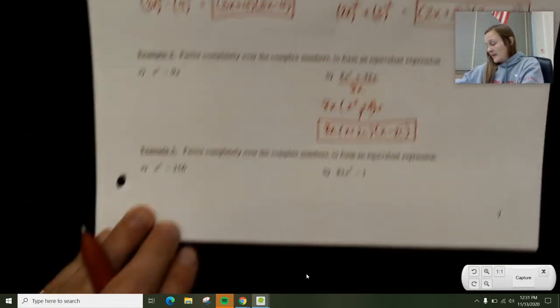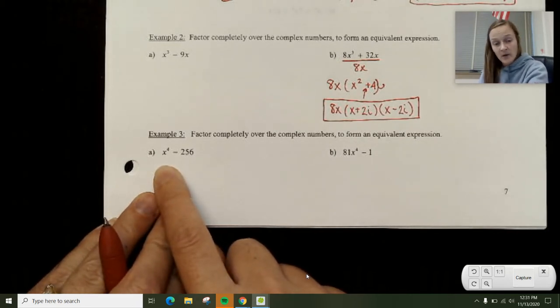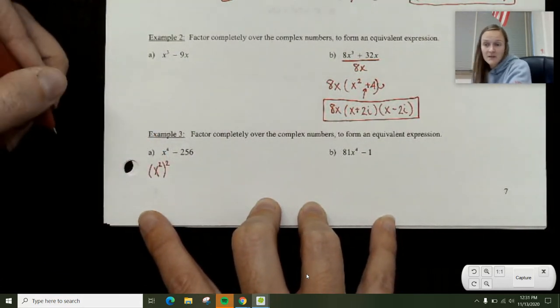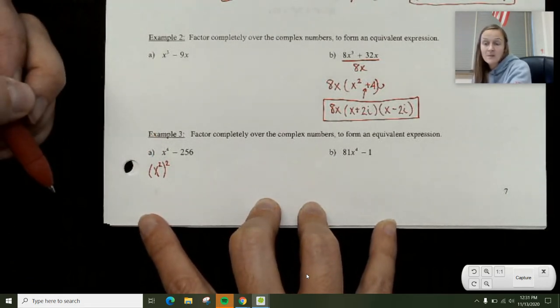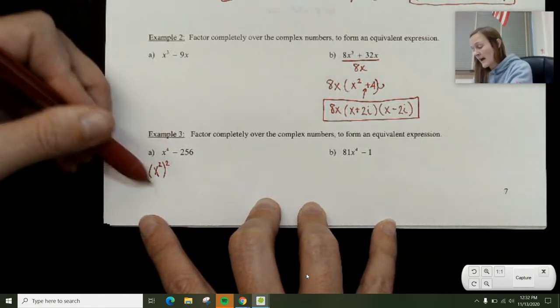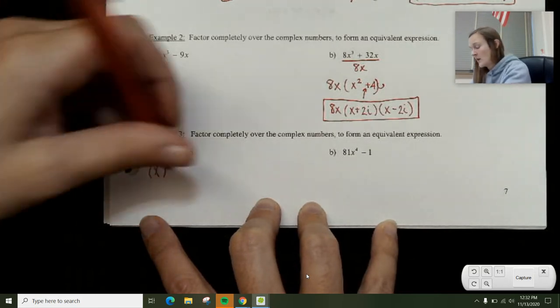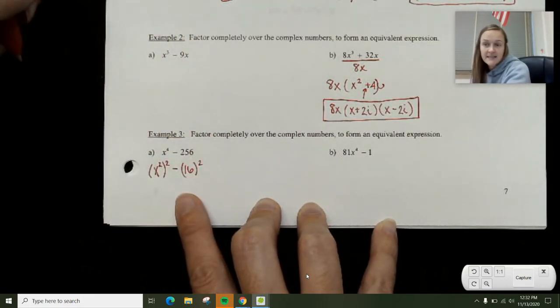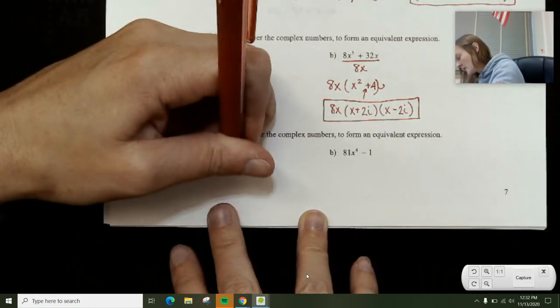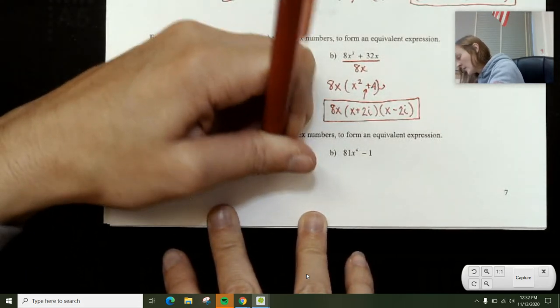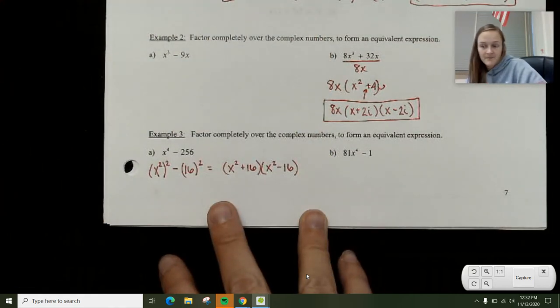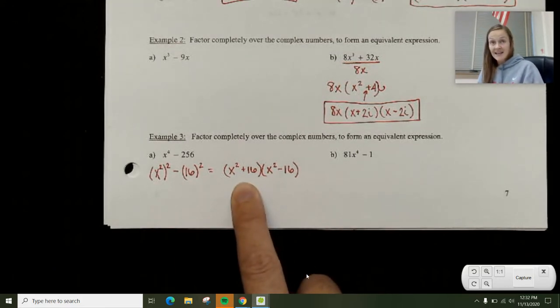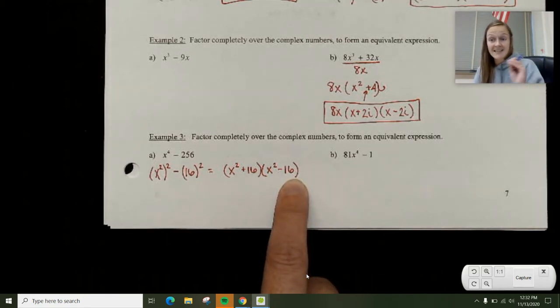The last one I'm going to do is 3a. This one is x⁴ - 256. x⁴ equals (x²)², so that's a perfect square. Actually, any even exponent is going to be a perfect square. Because if you think of the power rule, you would have something squared to get to an even exponent. So I have (x²)² - 16². Minus sign means that's a difference of squares. So that tells me this is going to be equal to (x² + 16), no i's, and (x² - 16).